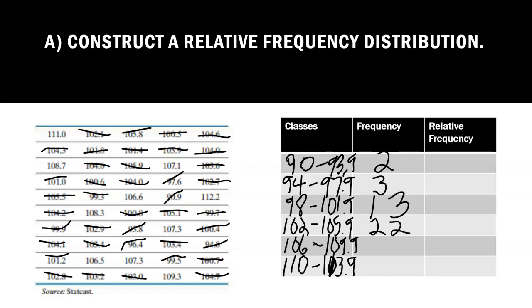Now I want to count the numbers between 106 and 109.9. There's 1, 2, 3, 4, 5, 6, 7, 8. There's 8 in that category.